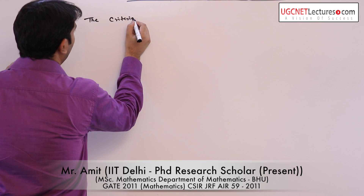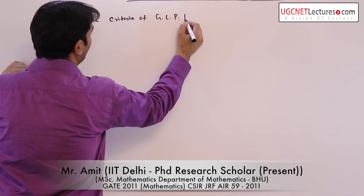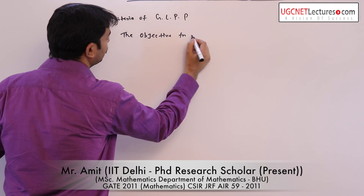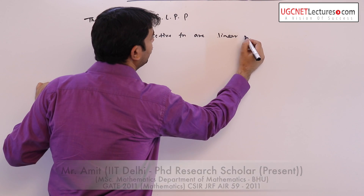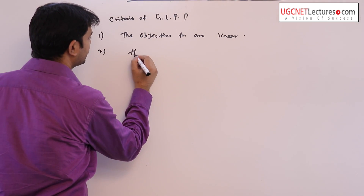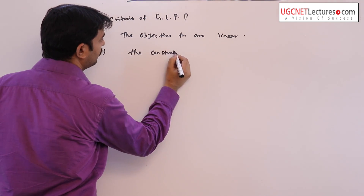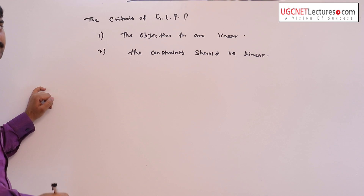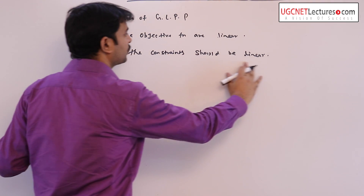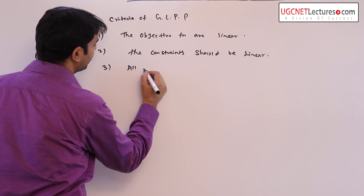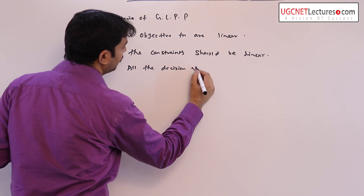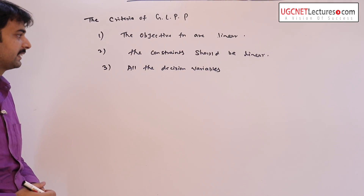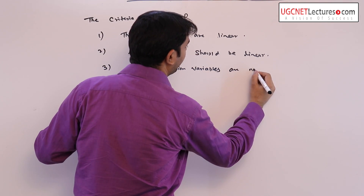The criteria of a general linear programming problem: first, the objective function must be linear. Second, the constraints should be linear, that is Ax is less than or equal to, equal to, or greater than or equal to some value. Third, all the decision variables — x1, x2, and so on up to xn — are non-negative.